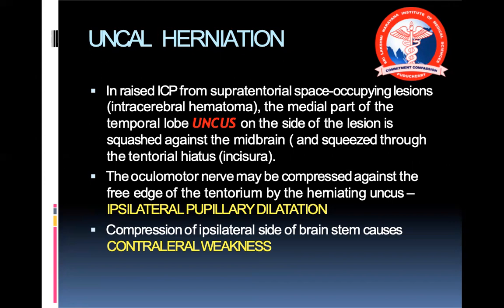This is important: when a patient presents with one pupil reactive and the other not, you must think of uncal herniation. It can also result from compression of the ipsilateral brainstem causing contralateral weakness. So a patient with uncal herniation will present with ipsilateral pupillary dilatation and contralateral weakness.